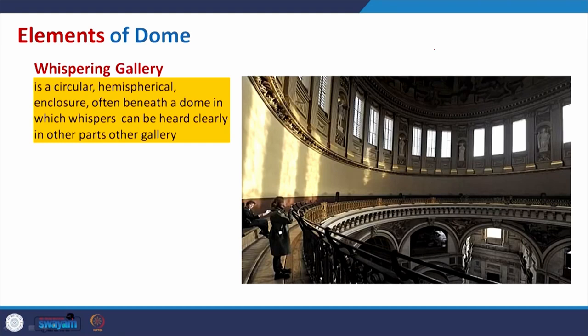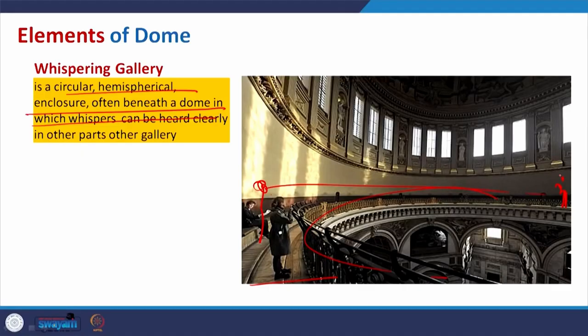The whispering gallery is a circular or hemispherical enclosure often beneath the dome — an area where you can stand, whisper, and the sound travels around so someone else can hear it. In India this can be observed at Golgambuj in the south. If you have visited, you have experienced this; if not, it is worth planning a visit.